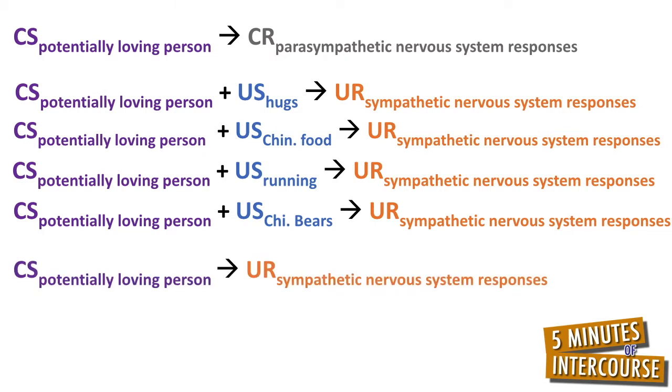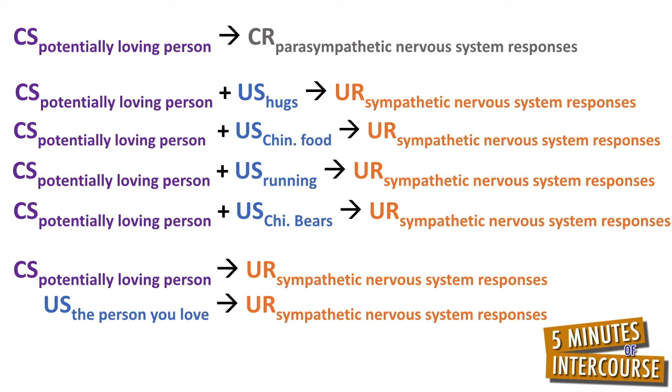Until finally, according to your sympathetic nervous system, your loved one became equal to hugs, early morning Chinese food, running, and the Chicago Bears football team. I realize classical conditioning cannot explain everything about love. However, classical conditioning makes clear the requirements of a happy, long-term relationship include two people doing loving things together. These requirements have one subtle but important caveat: having loving things in common with another person does not predict falling in love or staying in love. What predicts love forming and remaining is doing loving things together. What predicts love ending is doing loving things apart.